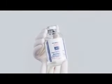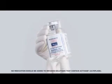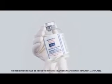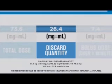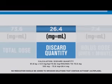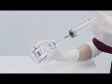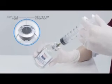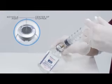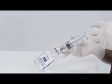Visually inspect the Activase solution for particulate matter and discoloration before administration. To ensure proper dosing, discard excess by removing the excess drug from the Activase vial. To remove the discard quantity of 26.4 milliliters, slightly tilt the vial and insert the needle into the keyhole port of the vial top, away from the puncture site made by the transfer device.